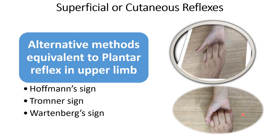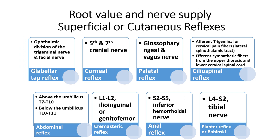In the Wartenberg sign, the patient is asked to flex their fingers like a hook, and we interlock our flexed fingers with the patient's fingers, then try to pull apart. Normally the thumb remains extended. If the patient has a corticospinal tract lesion, the thumb will be flexed and adducted. This slide shows the root values and nerve supply of all the superficial and cutaneous reflexes explained. This is all about the superficial reflexes. Thank you.